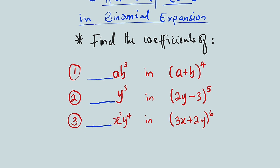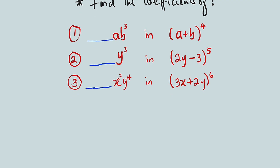The first problem: we want to find the coefficient of ab to the third power in the expansion of (a + b) to the fourth power. The general formula is n combination r, a raised to the power of n minus r, then b raised to the power of r. This is to show you that the power of b is always equivalent to r.